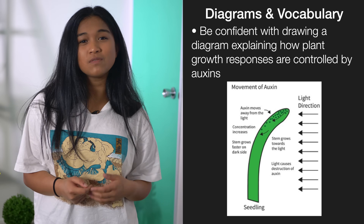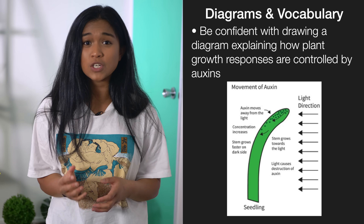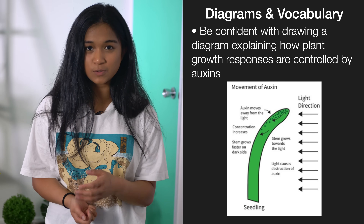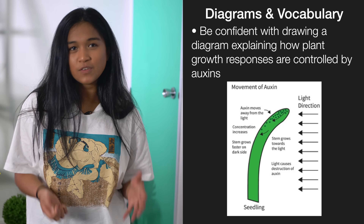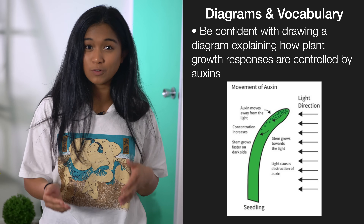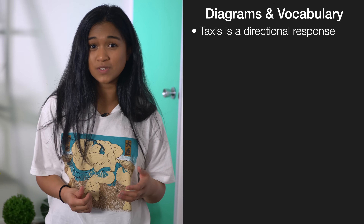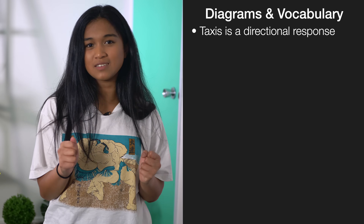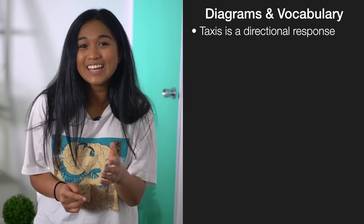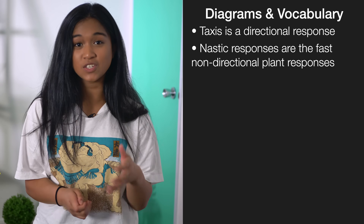There's also a lot of vocabulary that might be hard to memorize. While there's no easy shortcut, there are some tricks you can use to make memorization a bit easier. For example, knowing the difference between taxis and kinesis: if you think about yourself getting into a taxi and telling the driver where to go, you'll remember that taxis is a directional response. To remember what nastic responses are, think about touching a plant and the plant shrivelling up and saying "ew, nasty" — then you'll remember that nastic responses are fast plant responses.